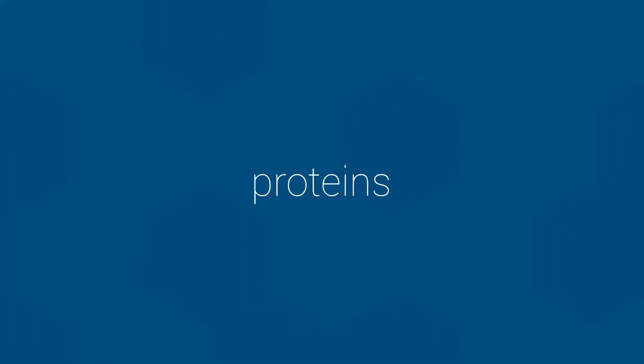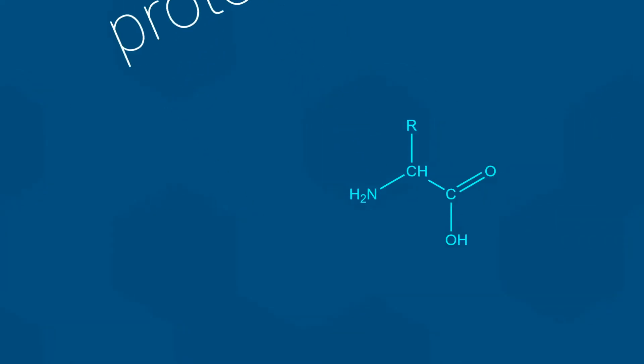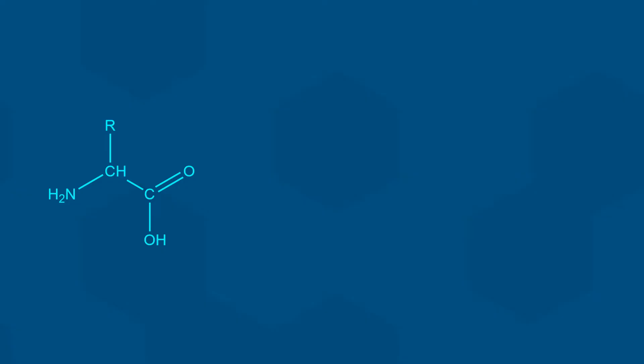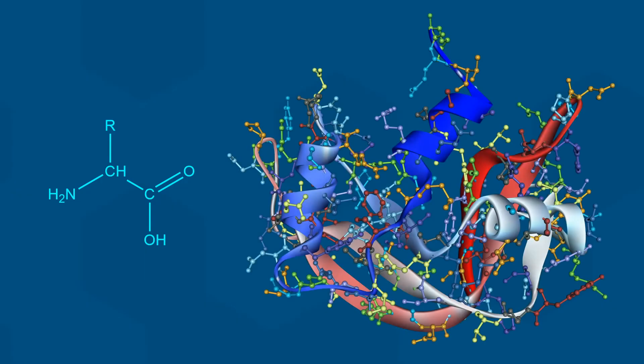Proteins comprise an important class of macromolecules in terms of cell functionality. If a cell needs to do something — like move, change shape, or carry out a chemical reaction — proteins are almost always involved. The subunit monomer of proteins is the amino acid. The general structure of amino acids, as shown here, underlies the incredibly complicated properties of proteins. The properties of the amino acids allow proteins to fold up into extremely complex shapes, and it is these shapes that define the function — something we will explore during Biology 112.